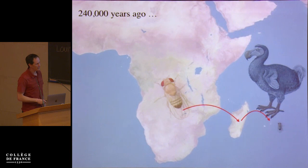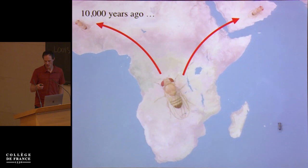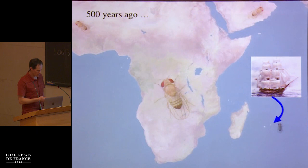Once there, it undoubtedly encountered *Raphus cucullatus*, the large flightless pigeon, a denizen of that island. Fast forward to about 10,000 years ago, when this ancestral African population started to spread throughout the world. It became commensal with humans and went to every continent along with us and our garbage.